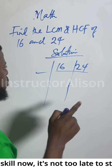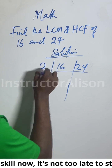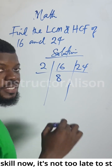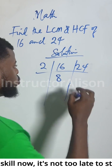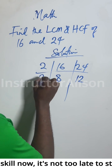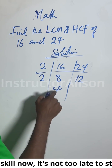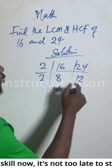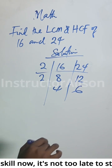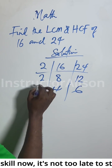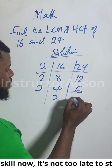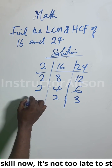What number can go into 16 and 24? Two can go into 16 eight times, and into 24 twelve times. Two can go into eight four times, and into twelve six times. Two can go again — into four two times, and into six three times.